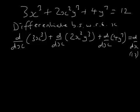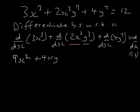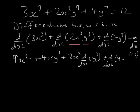So d by dx of 3x cubed plus d by dx of 2x squared y cubed plus d by dx of 4y to the power 7 equals d by dx of 12. So, some of this is easy, some of this isn't. Differentiate 3x cubed with respect to x, 9x squared. This bit here, though, we've got a product. It's 2x squared multiplied by y cubed.